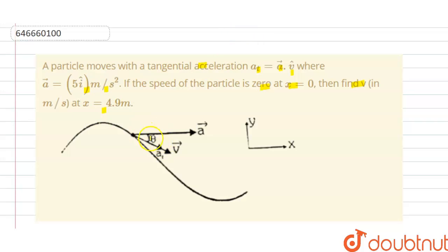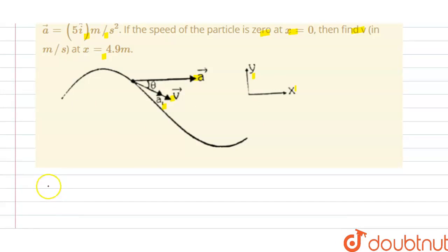So this is our tangential acceleration, this is v velocity. The solution of this question is: